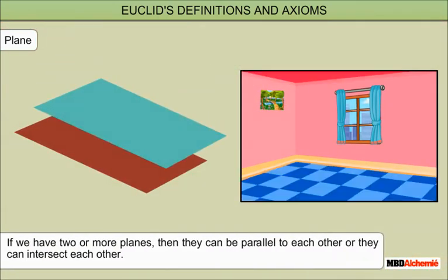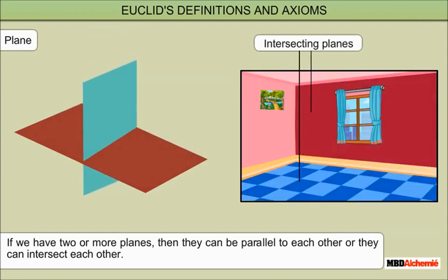If we have two or more planes, then they can be parallel to each other, or they can intersect each other.